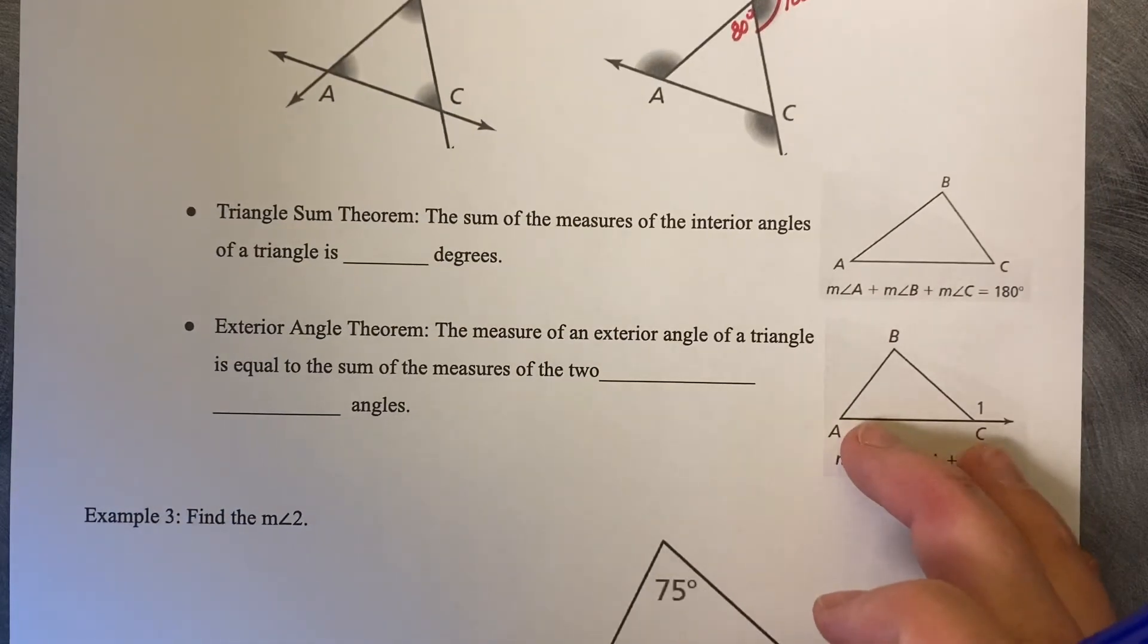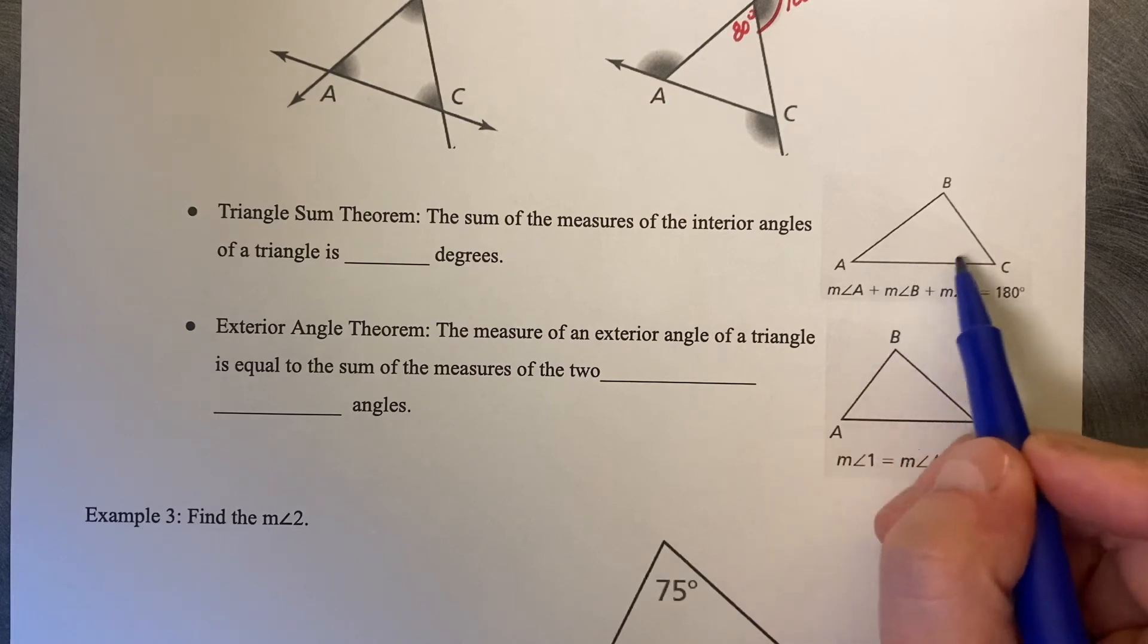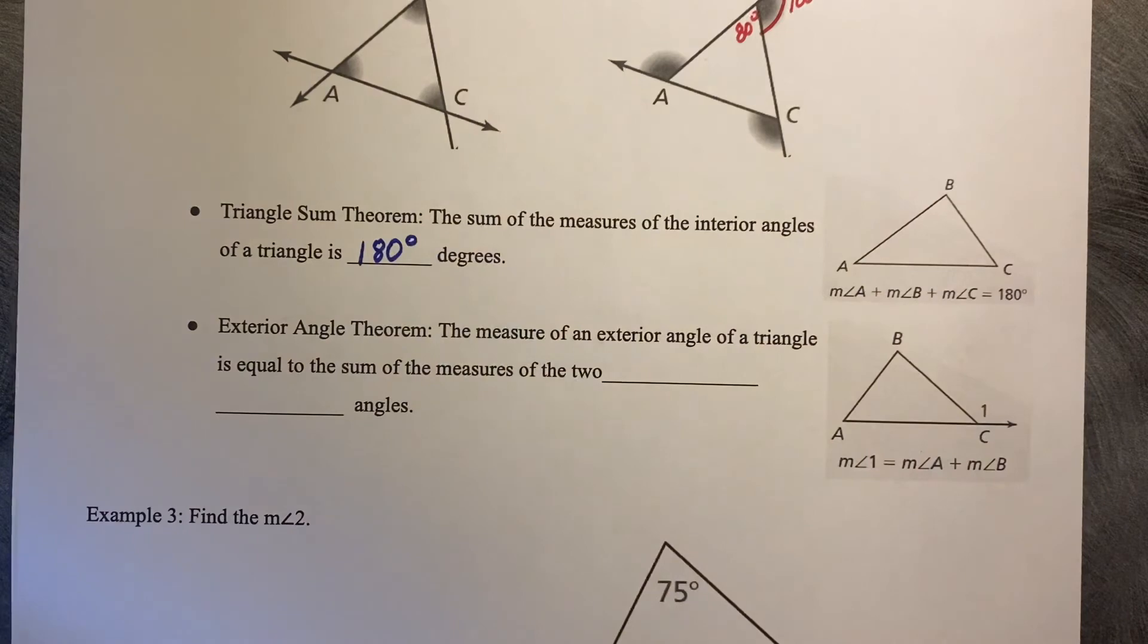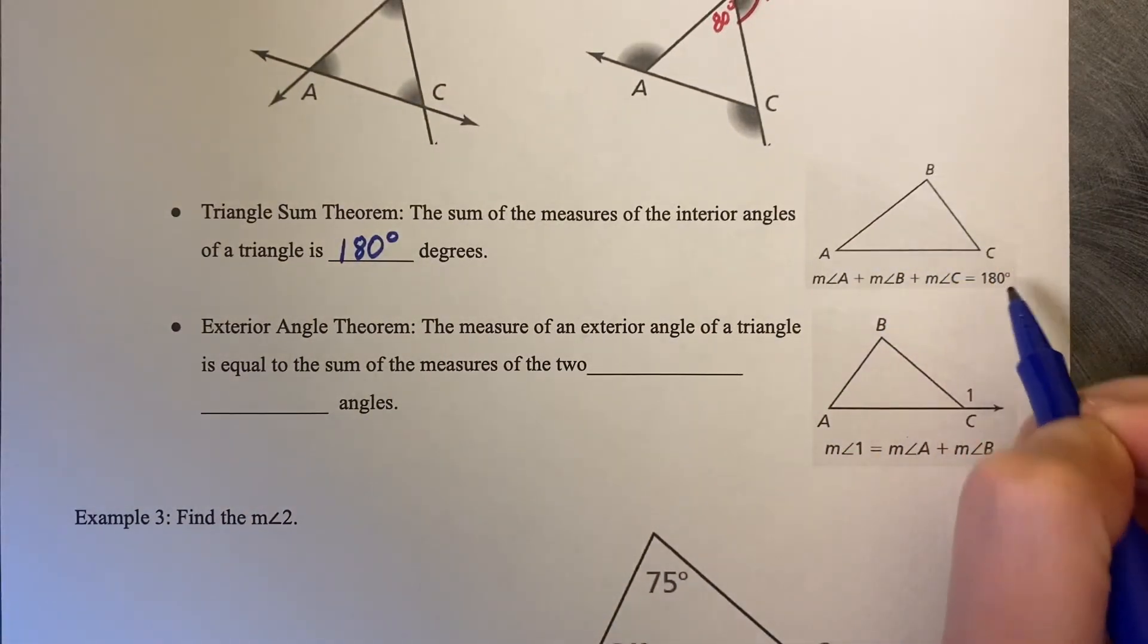This is something that we just discussed, the triangle sum theorem. What's true about all the interior angles of a triangle? They all sum to 180 degrees. All three angles, A plus B plus C is 180 degrees.